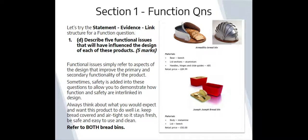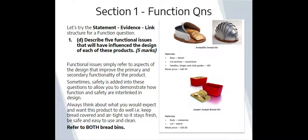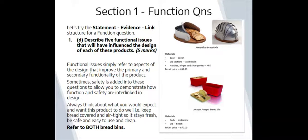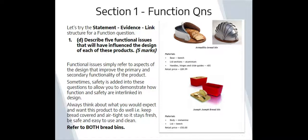We're now going to look at section one questions which focus on function. We're going to use the same structure that we have been using for previous questions with the statement, evidence, link structure. This question is asking you to describe five functional issues that will have influenced the design of each of these products. This time we're looking at two bread bins, so we've changed up the products for this example.